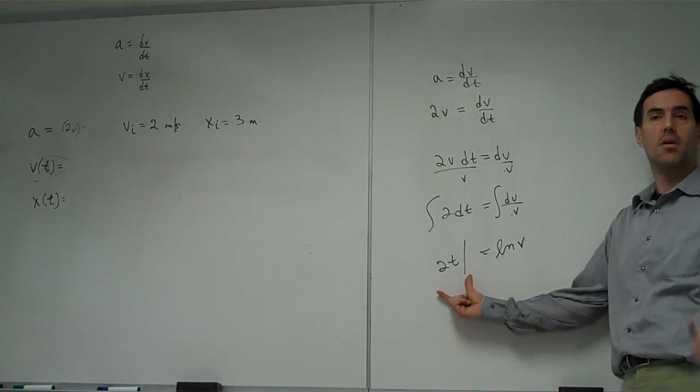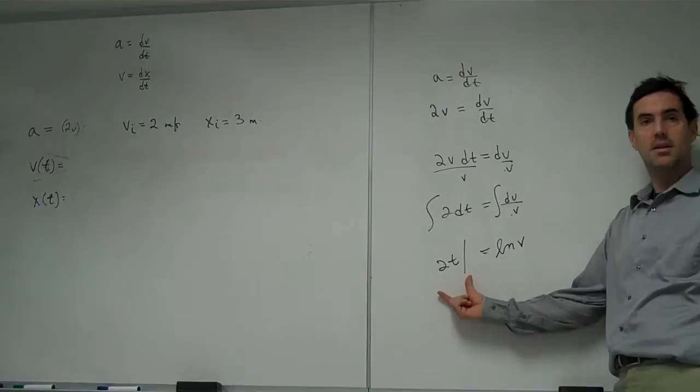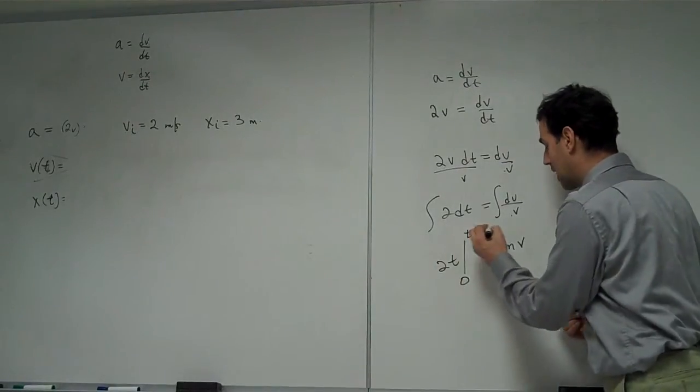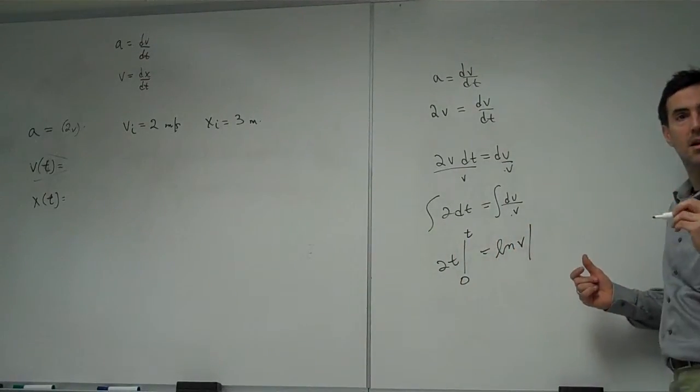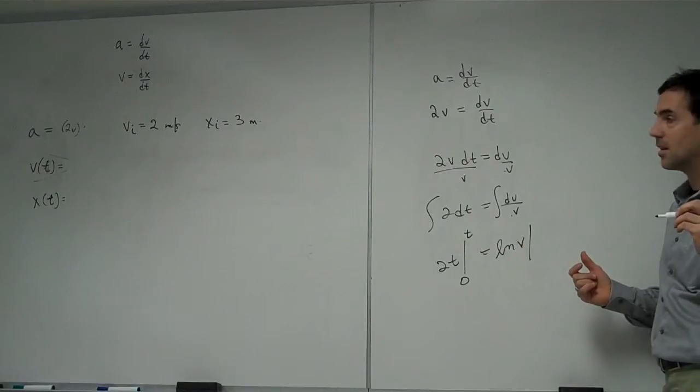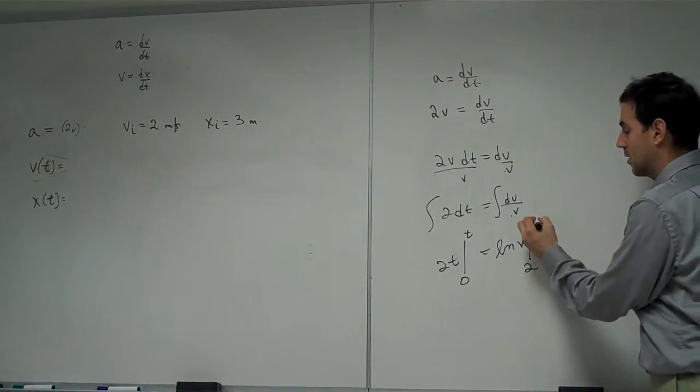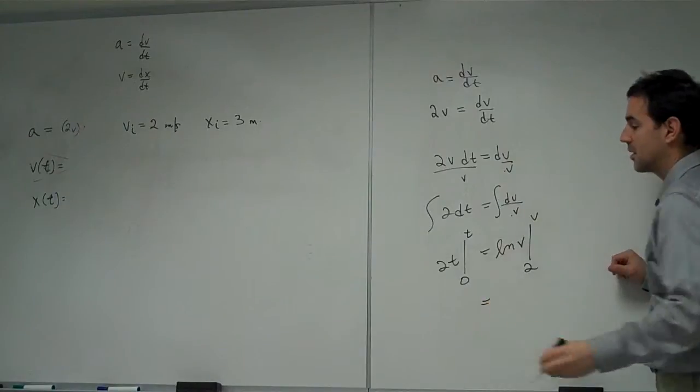Limits. Limits on time, Gardner. Zero and t. Good. Limits on velocity, Gardner. The initial, which is 2. Yep. Good. Put these limits in.